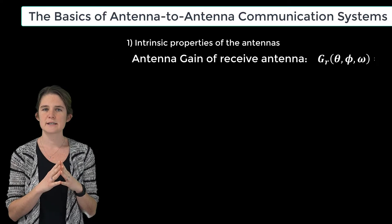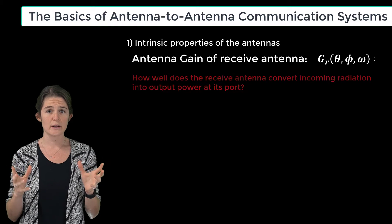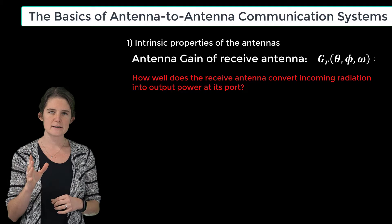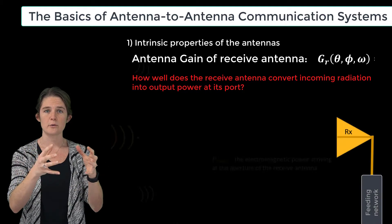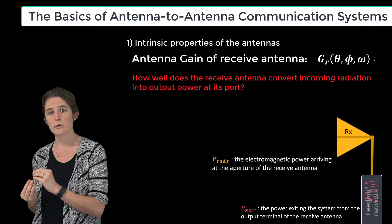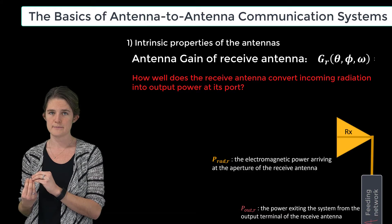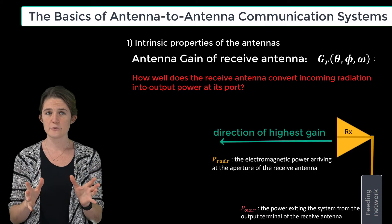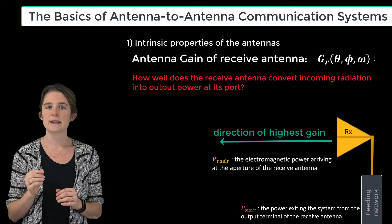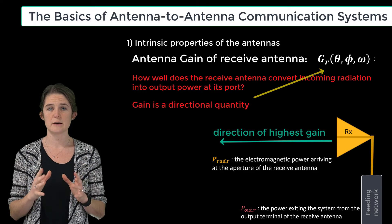The second part of this consideration is the antenna gain of the receive antenna, which is again a measure of how well the individual antenna converts input power to output power. For the receive antenna, the input power is an electromagnetic wave impinging upon the body of the antenna, and the output power is a guided wave funneled into the output port. Since the antenna will likely receive power more efficiently from some directions than others, the antenna gain is again a directional quantity that depends on the direction of the incoming wave.